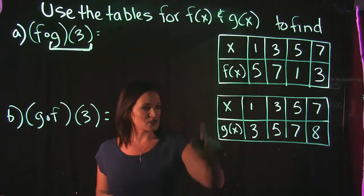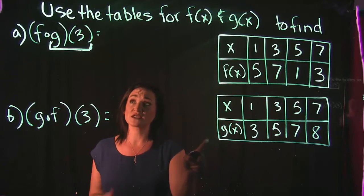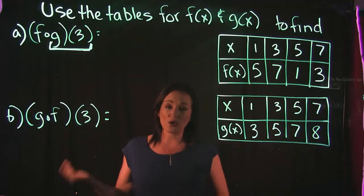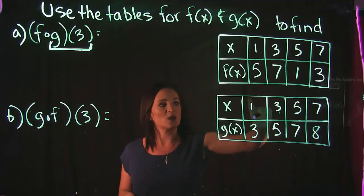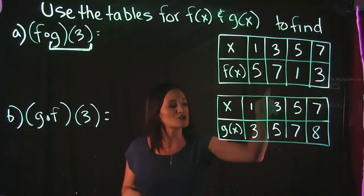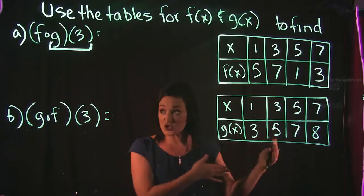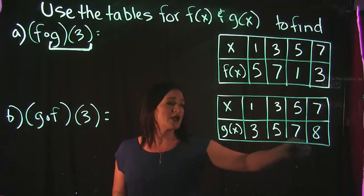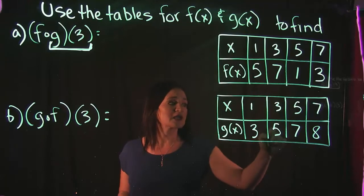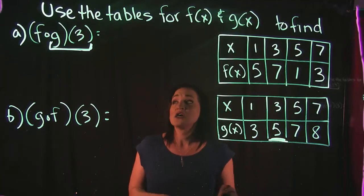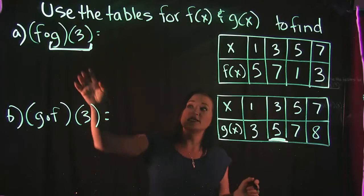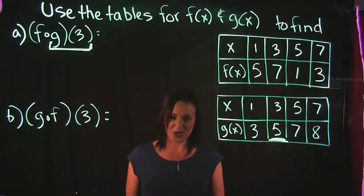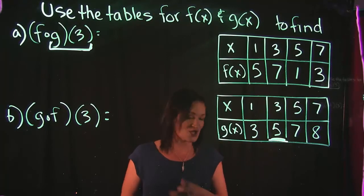Looking at the tables, the bottom table is our g of x table. The top row is my x values and the bottom row is my y values. So when x is 1, y is 3; when x is 3, y is 5, and so on. My specific question says g of 3, so I find 3 in the x values — when I put in 3 for x, I get 5 for y. So g of 3 equals 5.